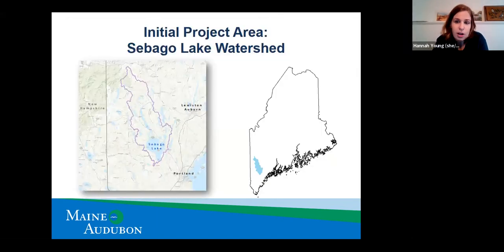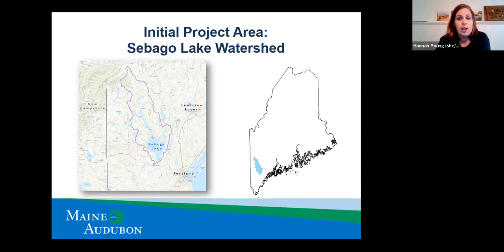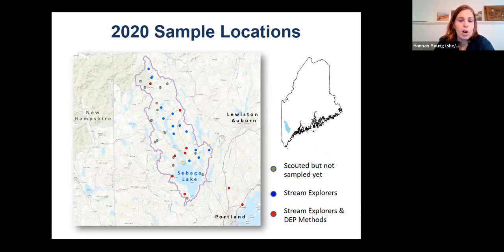In 2020 we initially focused on about 30 to 40 streams in the Sebago Lake watershed — an important area providing water to over 200,000 Mainers that hadn't been recently surveyed by DEP. All our partners are focused around that area, making it a great localized starting point. We continued surveying those streams in 2021 and will again in 2022 while expanding the program. A map shows all the dots where stream explorers surveyed, with some locations also surveyed by DEP.